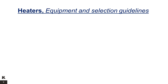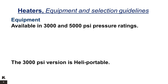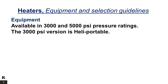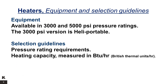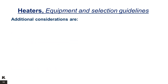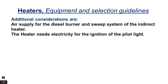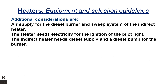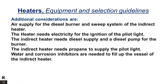Heaters — Equipment and Selection Guidelines. Equipment is available in 3,000 PSI and 5,000 PSI pressure ratings. The 3,000 PSI version is heli-portable. Selection guidelines depend on pressure rating requirements, heating capacity measured in British Thermal Units per hour, safety regulations, and available space. Additional considerations include air supply for the diesel burner and sweep system, electricity for ignition of the pilot light, diesel supply and diesel pump for the burner, propane to supply the pilot light, and water and corrosion inhibitors to fill the vessel.